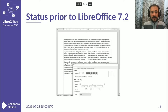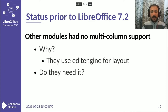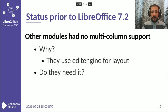This was already present in Writer before the 7.2 release. But other modules — Calc, Impress, Draw — didn't have this multi-column support, because they didn't use Writer's layout machinery. They all rely on Edit Engine to do that. And since we discuss the development that brought this capability into these modules, the question is: did they actually need this support, or was it okay without it?